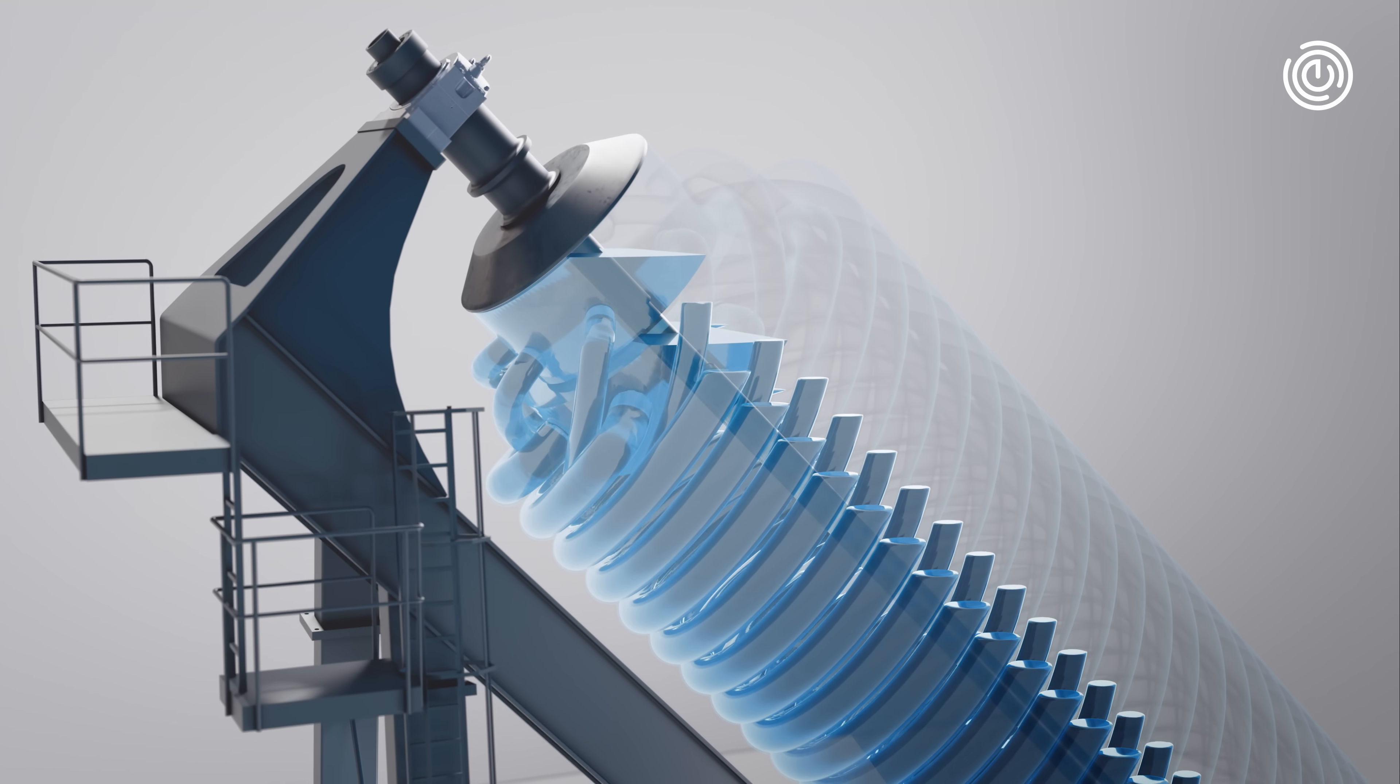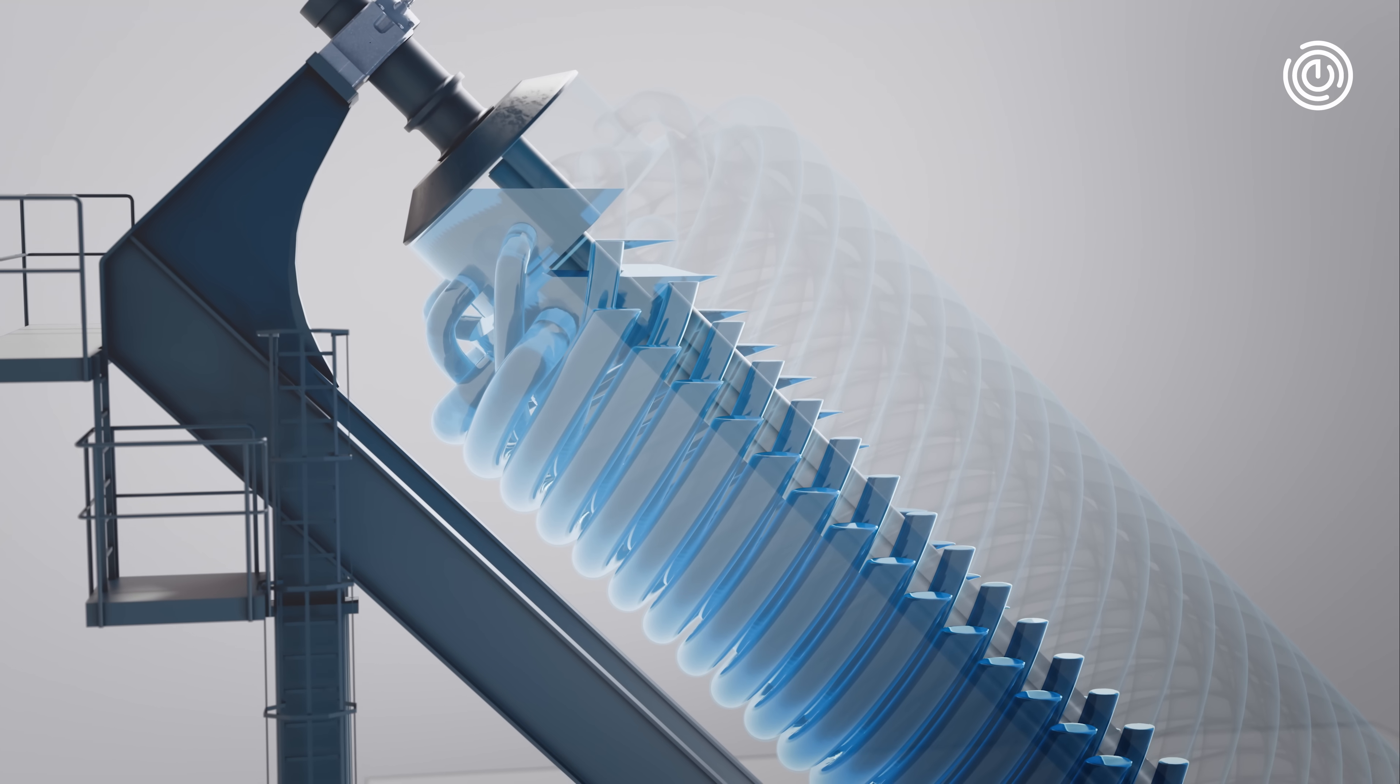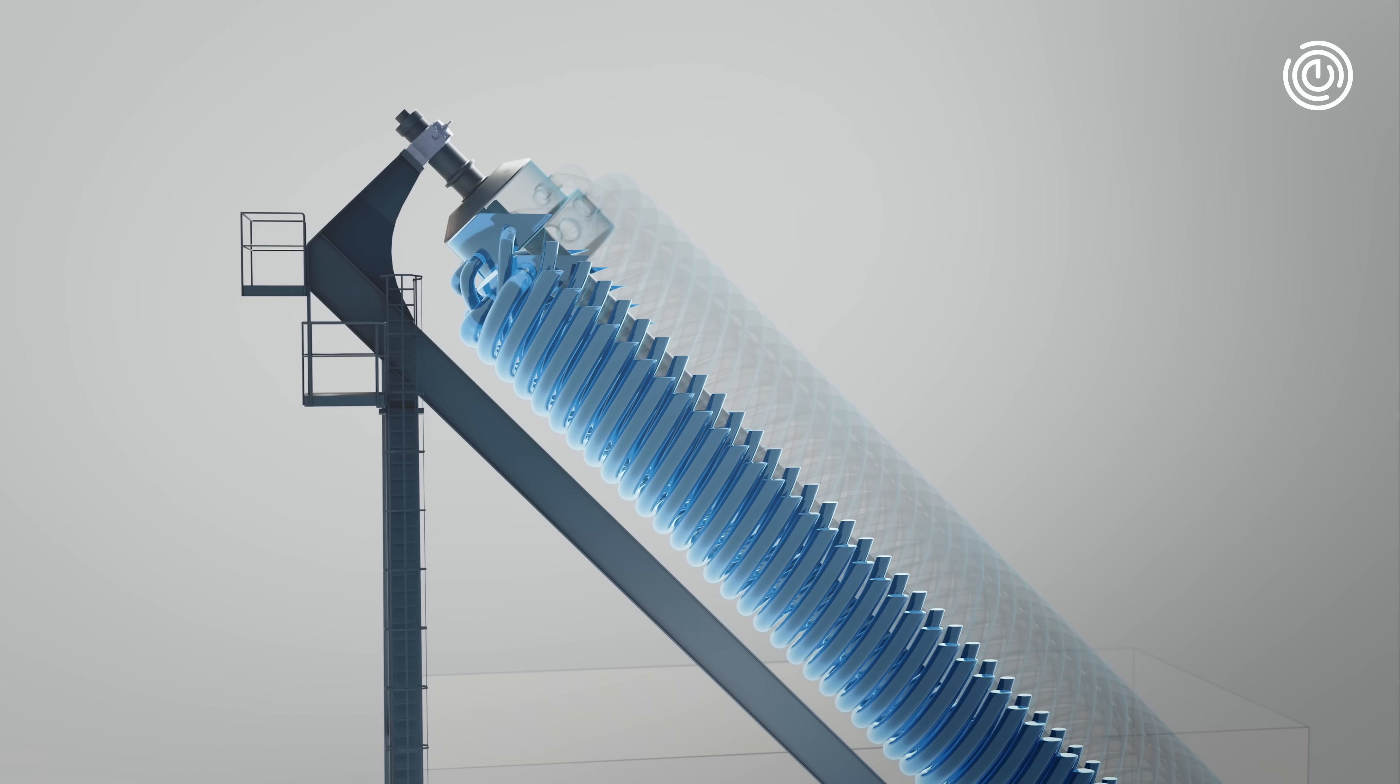As the spirals rotate, gravity pushes both water and air downward. With each revolution, the volume inside the spirals decreases, compressing the air further as it descends.